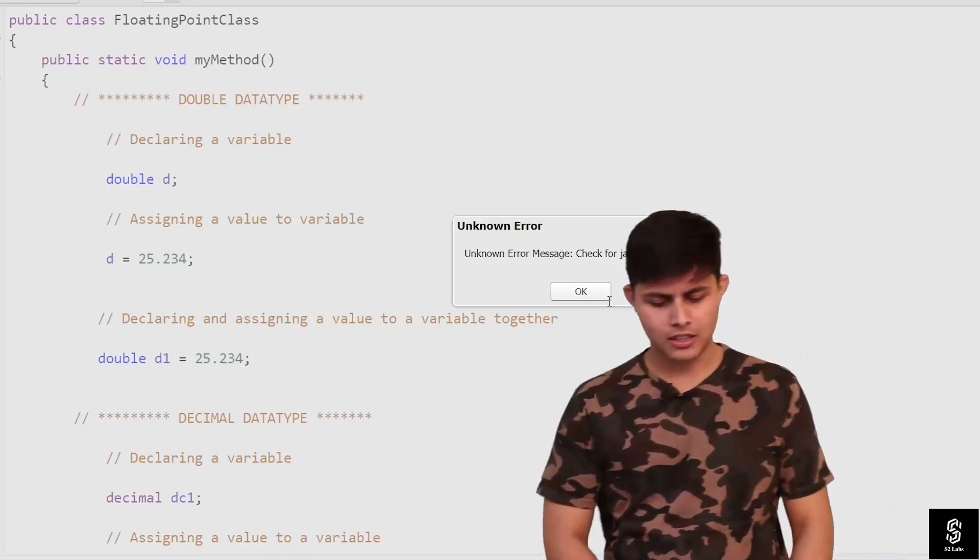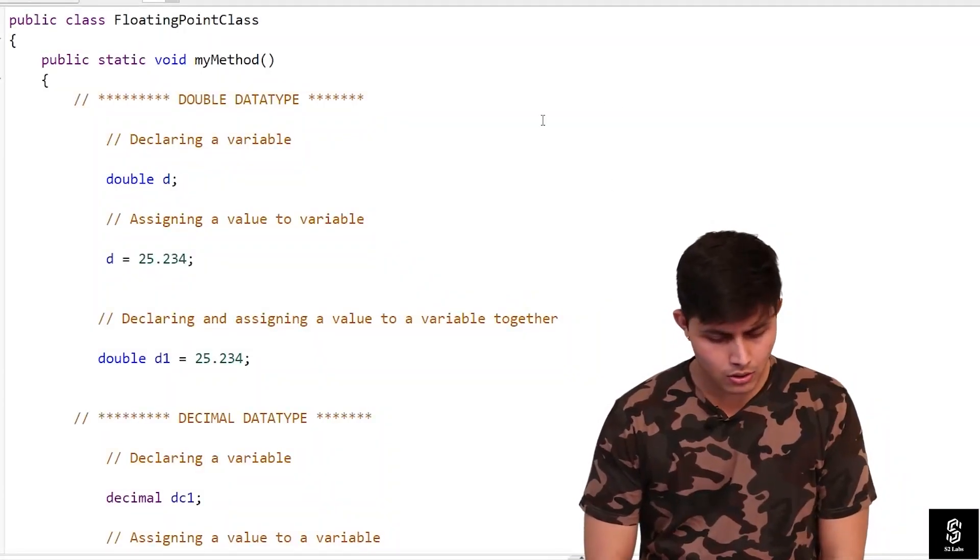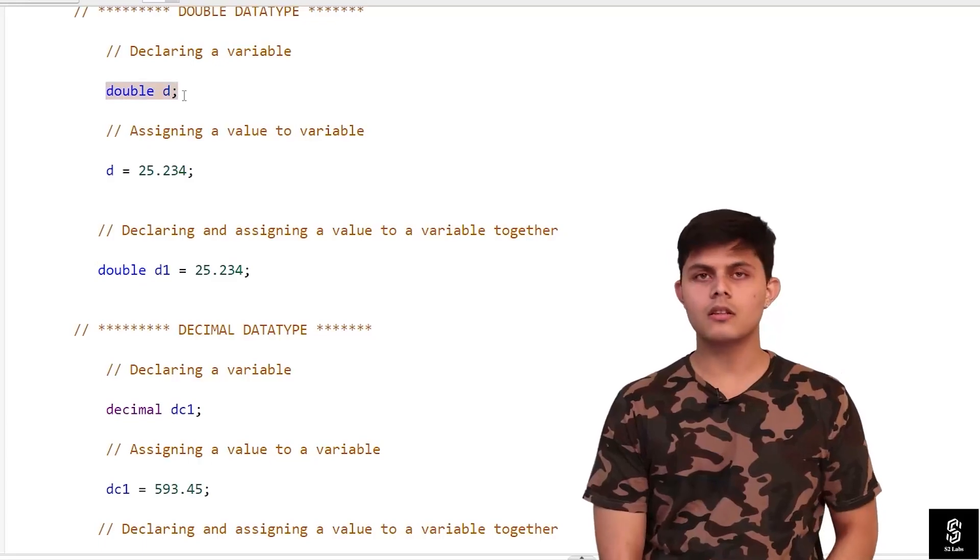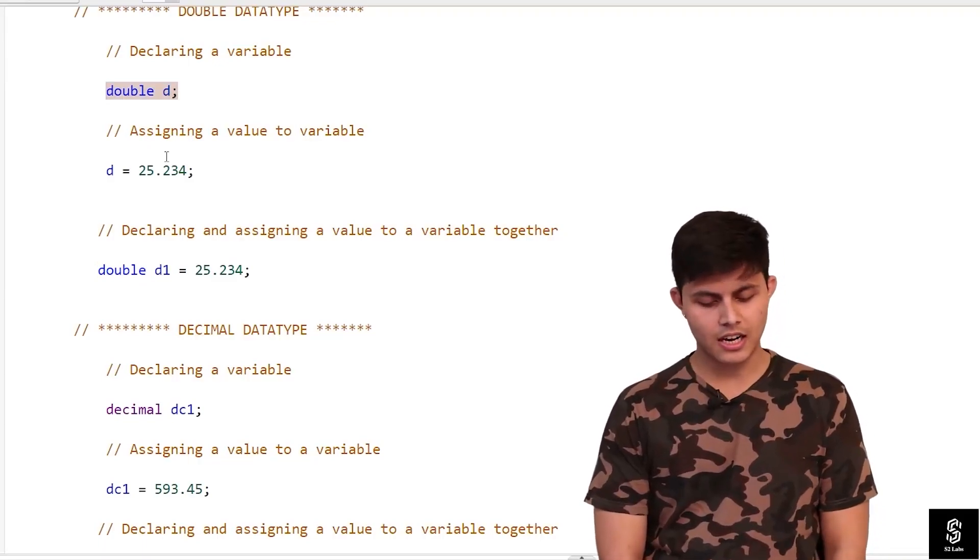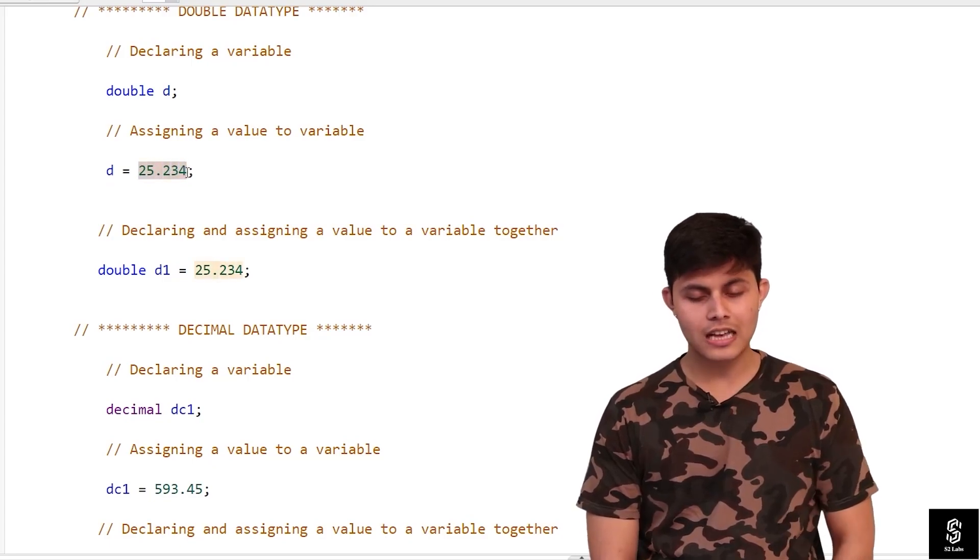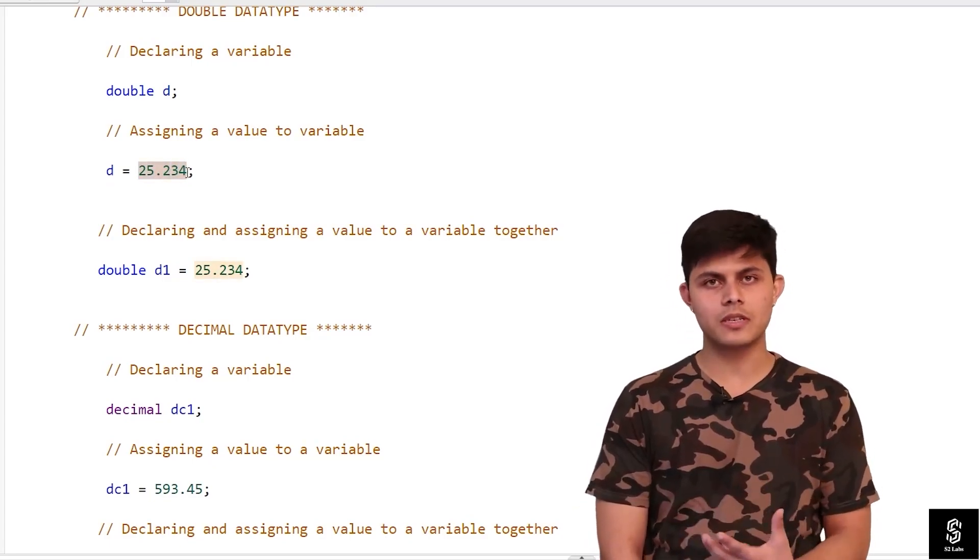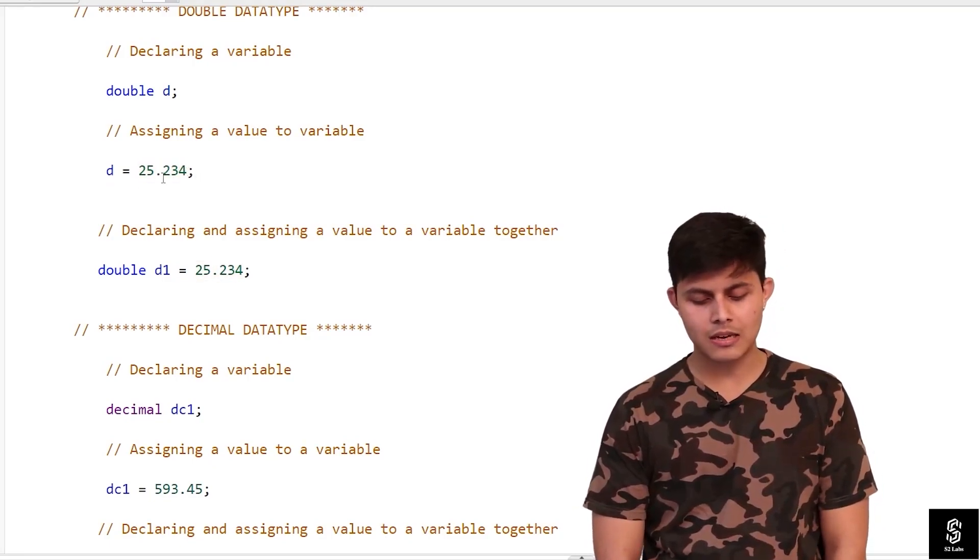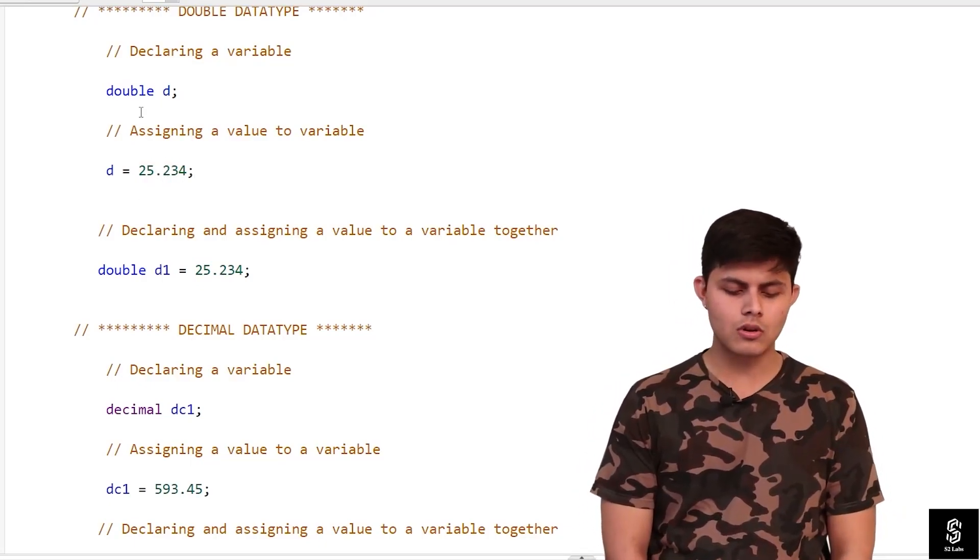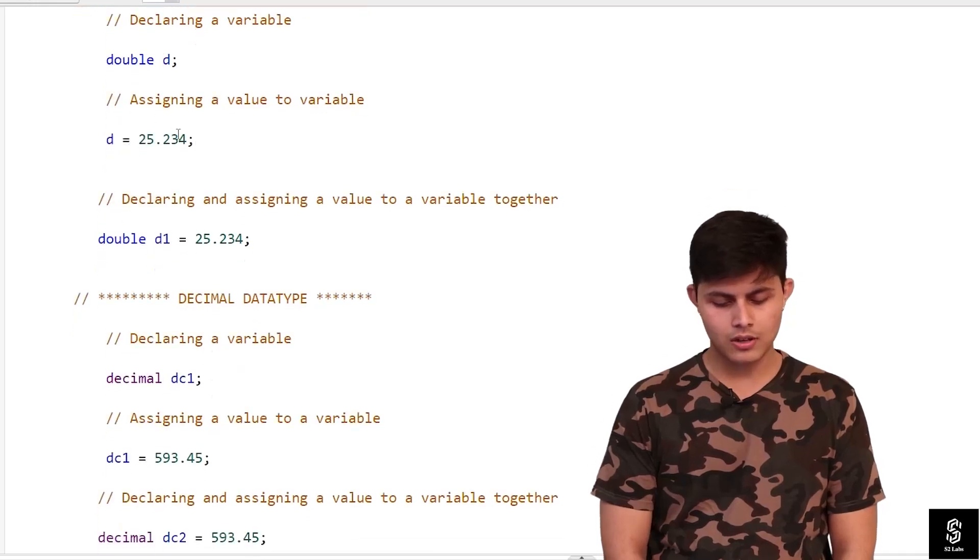Let's have a look at this program. Over here, this is how we basically declare a double variable with a double data type. This is how we assign a value - have a look, we're assigning a value which has some decimal places with it. We cannot assign the same thing to an integer variable; we can only assign this to a double variable.